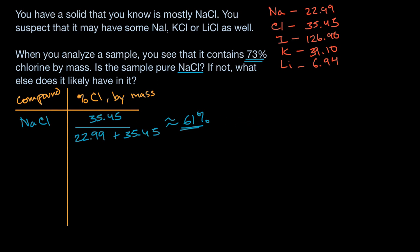So let's look at the other candidates. We can look at sodium iodide. What's its percent chlorine by mass going to be? Well, this has no chlorine by mass, so this is zero. So if you had sodium iodide mixed in with sodium chloride, that would reduce the average, that would reduce the percent chlorine by mass. It wouldn't increase it, so we already can rule out this character.